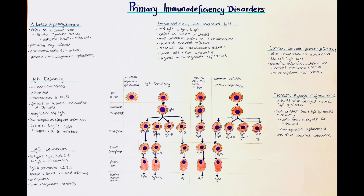Until they begin producing their own IgGs, they are susceptible to infections. It is called transient because it's not a permanent illness — at some point most children start producing their own IgGs, though the time it takes is individual. The treatment depends on the severity of symptoms, and mild cases may be left untreated with clinical observation and supportive counseling.